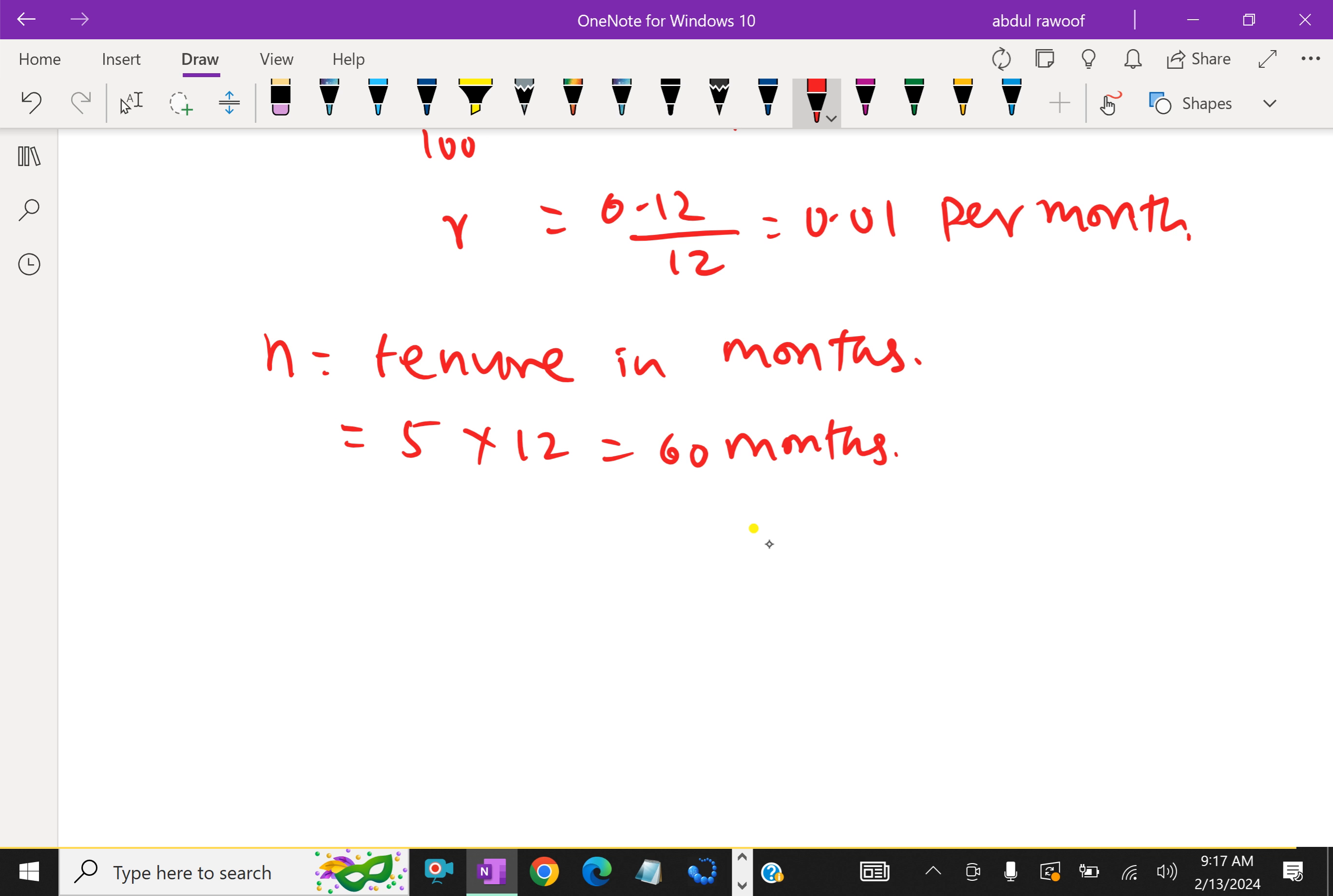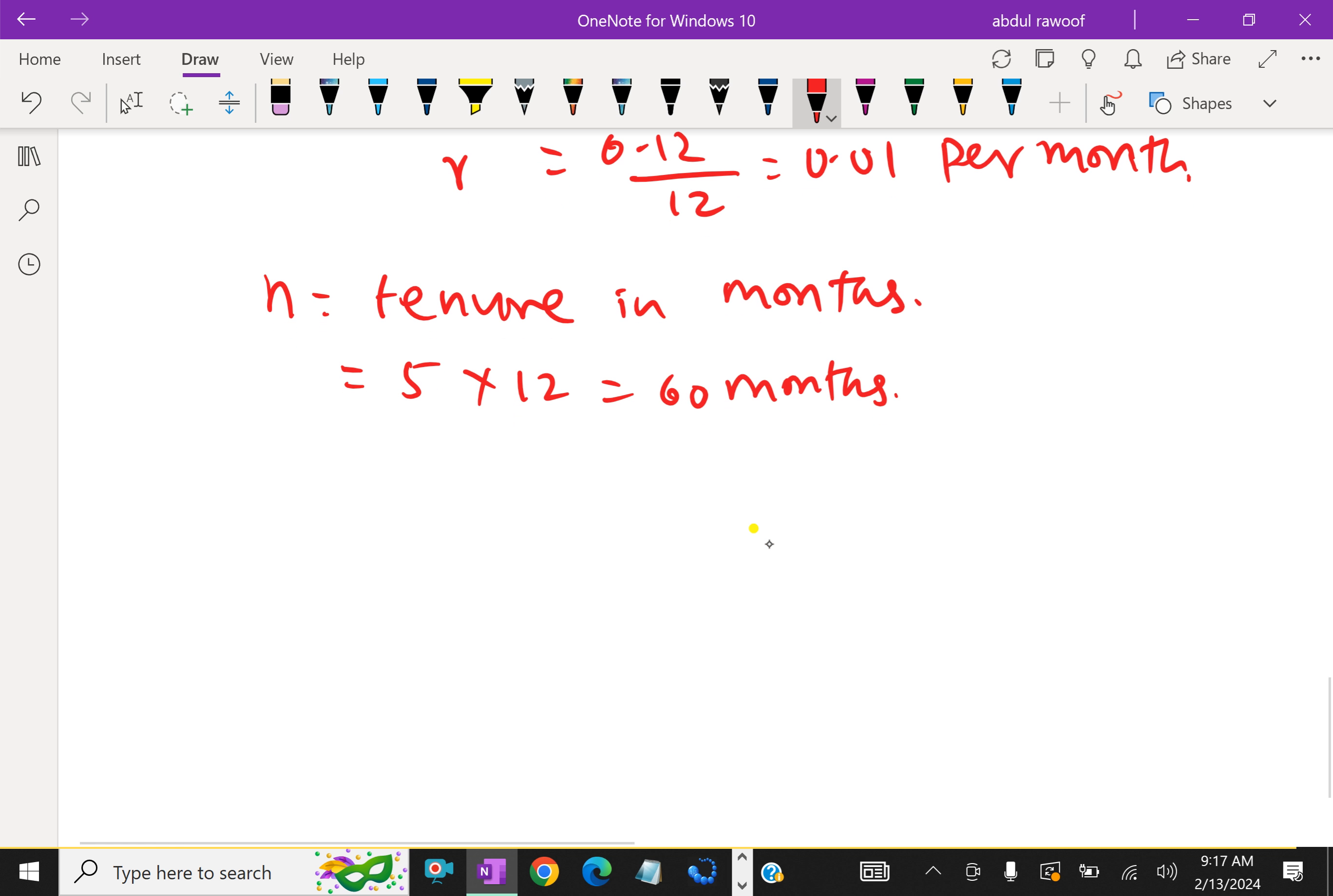Now EMI formula. Equal monthly installment payment is equal to principal into R into (1 plus R) to the power n over (1 plus R) to the power n minus 1. This is the formula for EMI calculation.